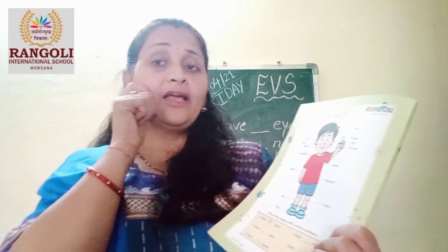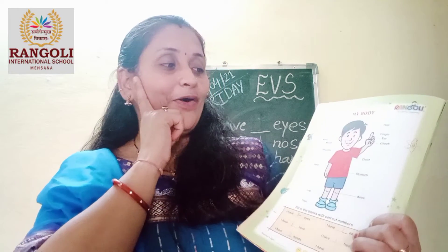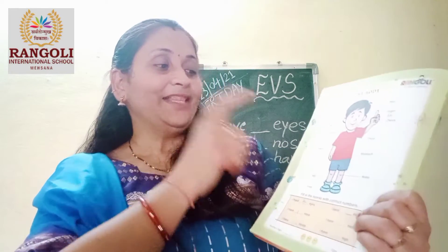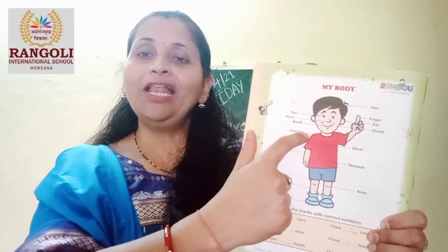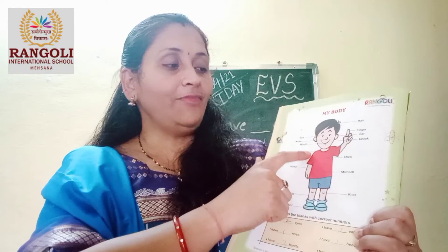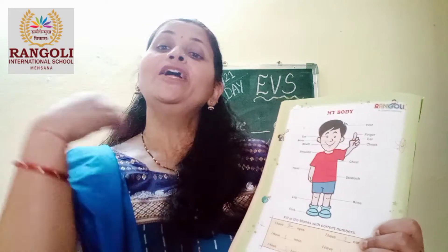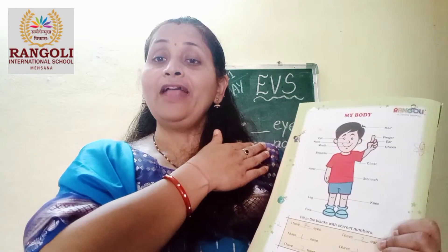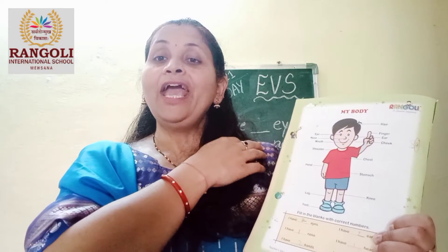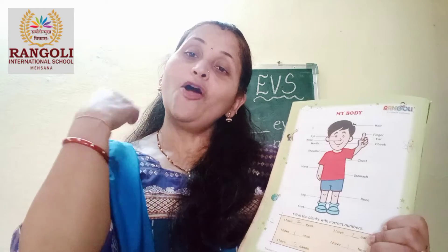Okay. Then cheeks — chubby cheeks! How many cheeks? Two cheeks. Okay. Then look at here, shoulder. How many shoulders? Two shoulders. And we hang our school bag on our shoulder.